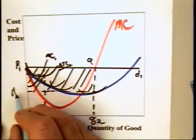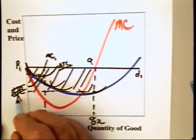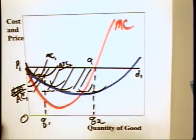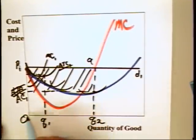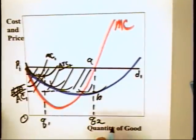Then it can multiply the average cost of AC1 and multiply times Q2 and get total cost, 0, AC1, B, Q2.